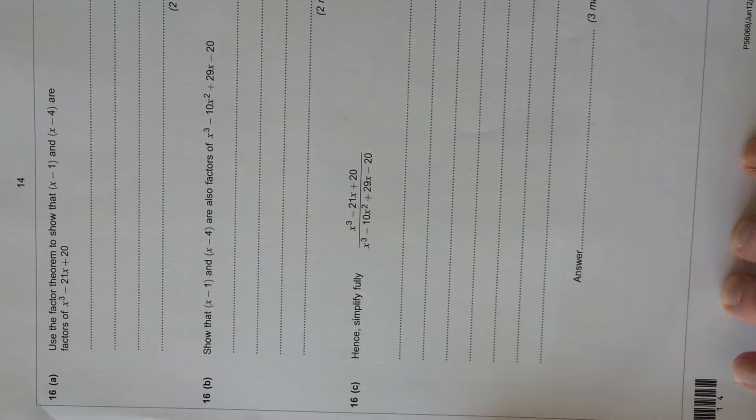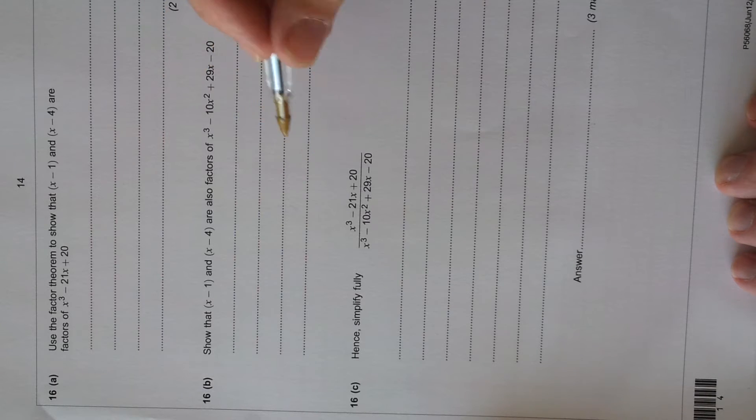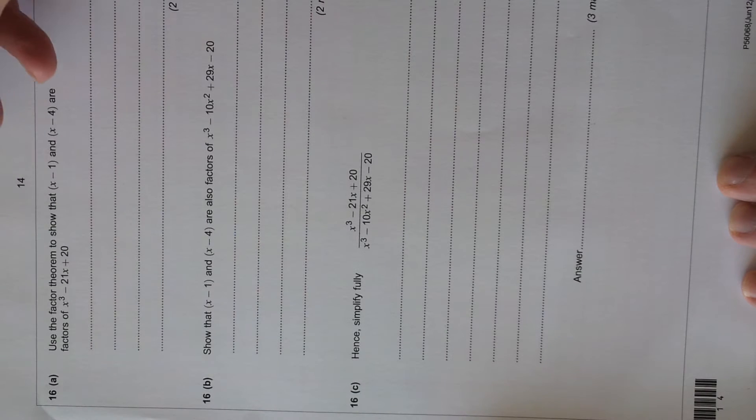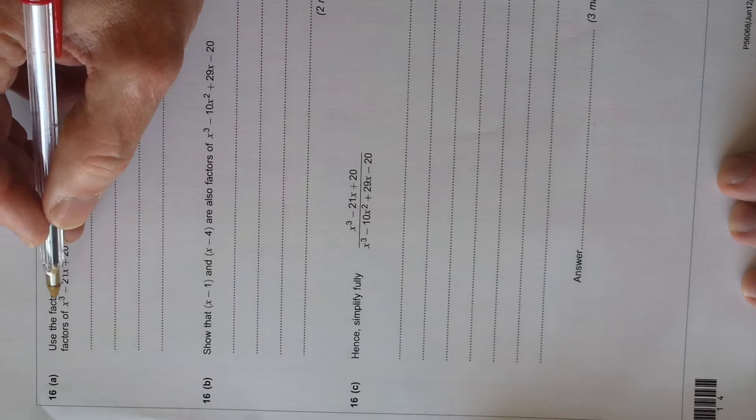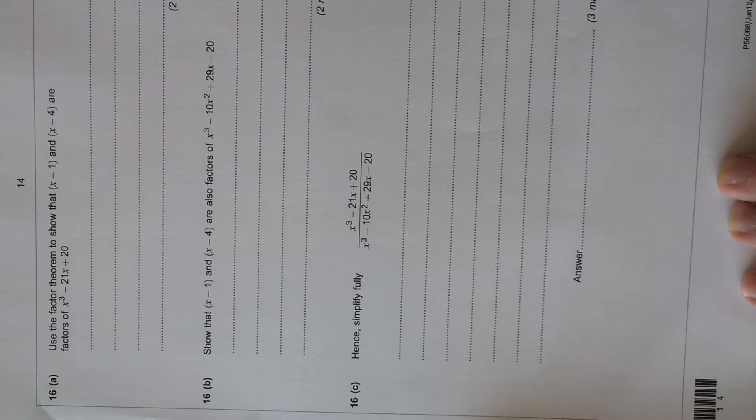Right, question 16 is about factors and factorising. Question 16a says, use the factor theorem to show that x minus 1 and x minus 4 are factors of x cubed minus 21x plus 20.